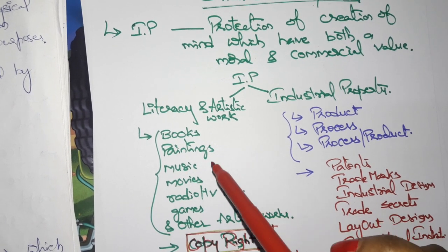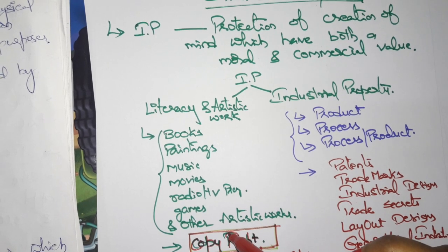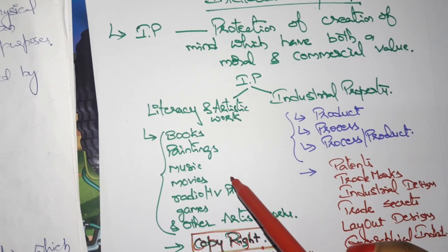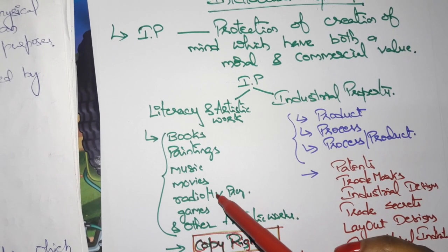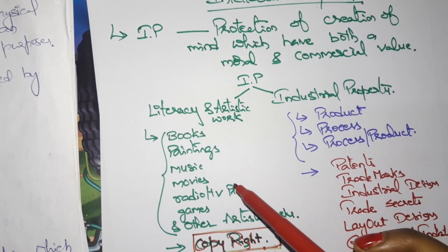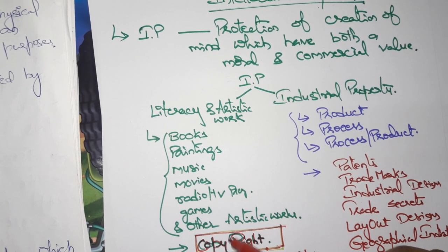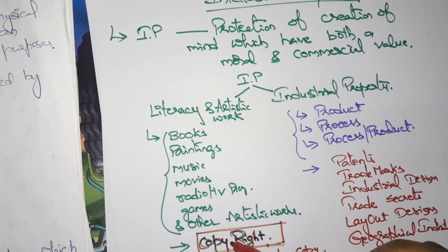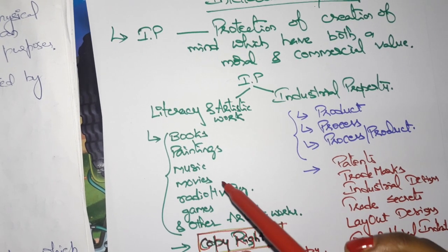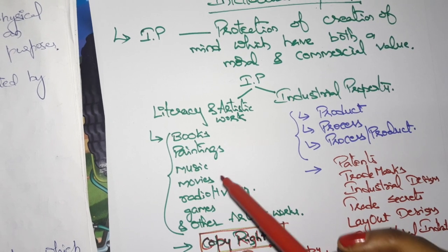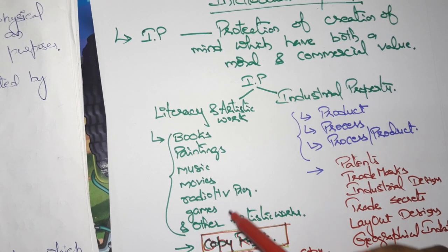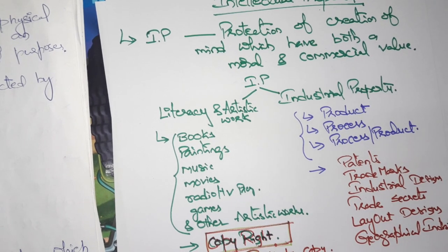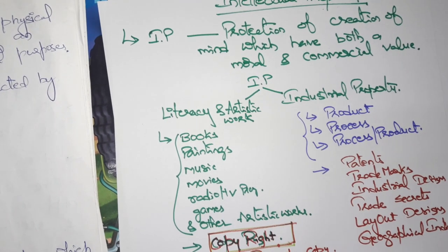To protect literary and artistic work, you take a copyright. For example, if you created a book with your own knowledge and released it onto the market without taking any copyright, there is a chance that another person may take copyright on your book and claim to be the only author. So there would be no recognition of your own creativity. To overcome that problem, you need to take copyright for literary and artistic work.